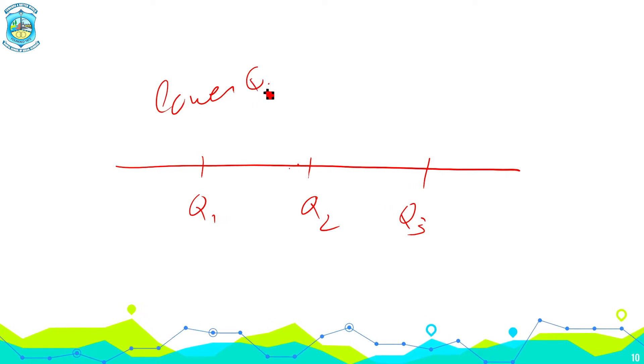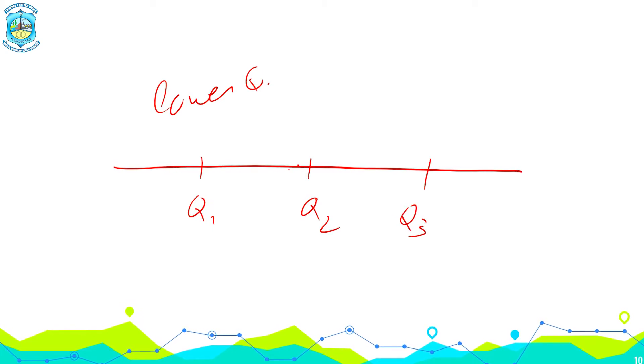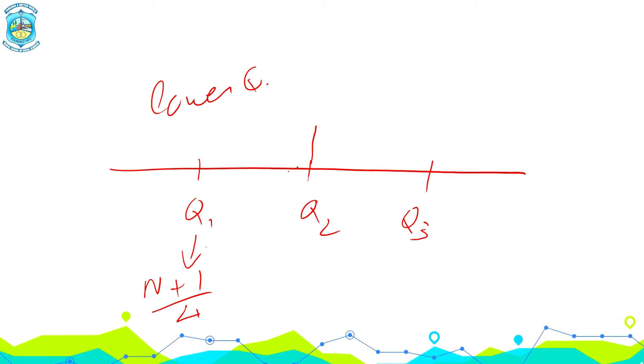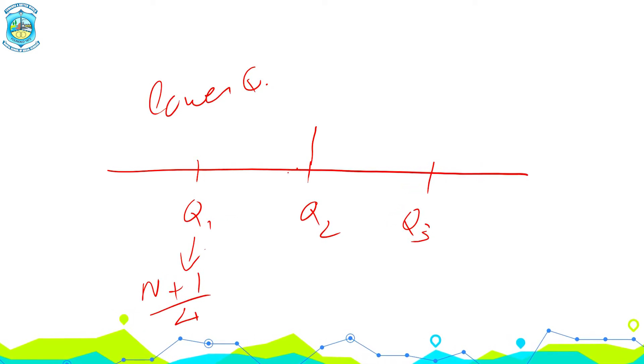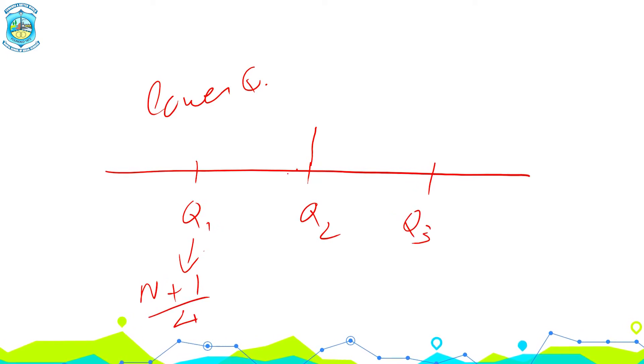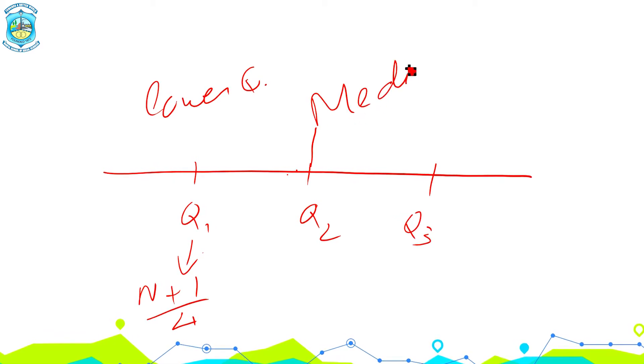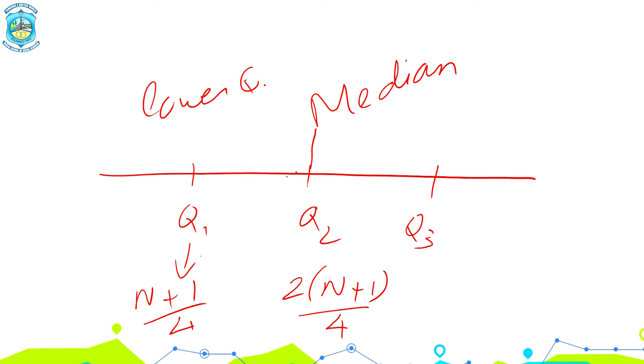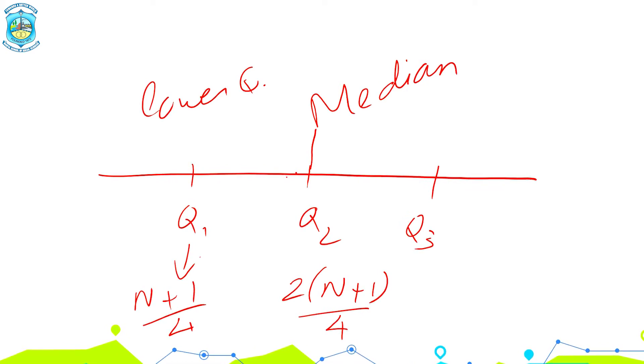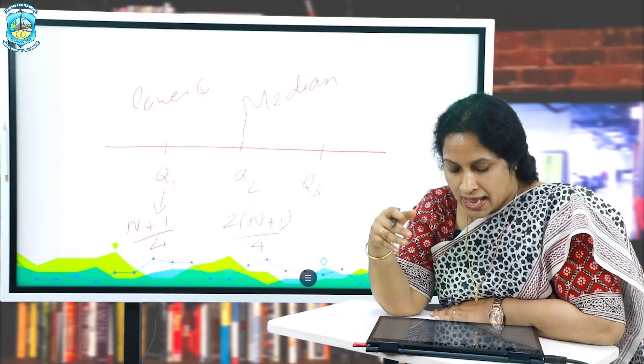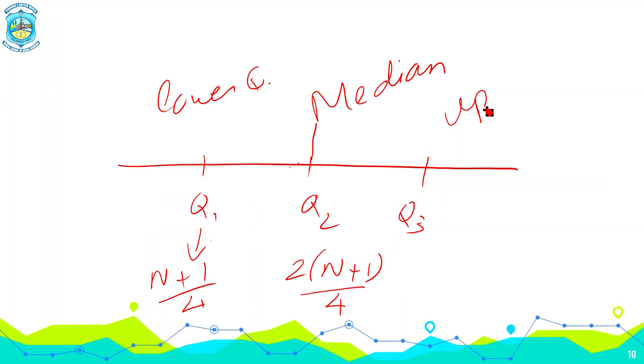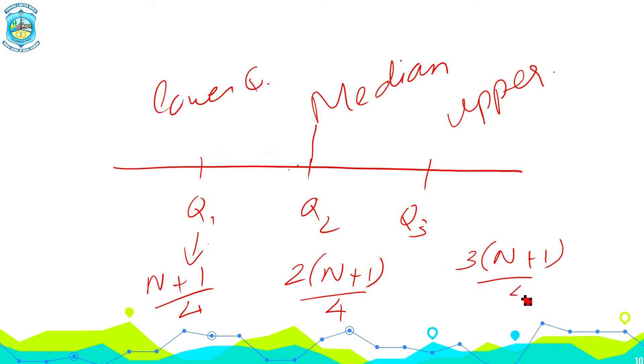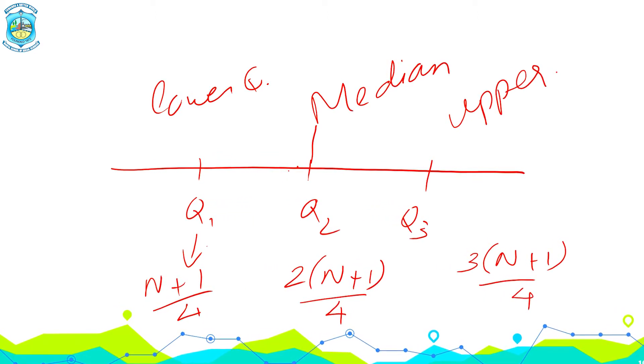And you can calculate in individual and discrete series using this formula, n plus 1 by 4. q2, you can see it is dividing in the ratio 1 is to 1. That means on the left, the values will be less and on the right, the values will be greater. So this is same as the median. And how do we calculate? It is 2n plus 1 by 4. So the denominator will remain the same, that is 4. 2n plus 1 by 4 is same as n plus 1 by 2, which makes it very similar to median. And the third quartile is also referred to as the upper quartile. And the formula goes on to be 3n plus 1 by 4.